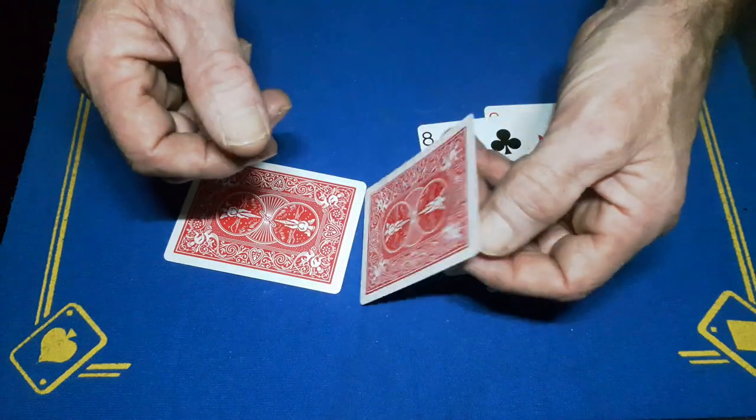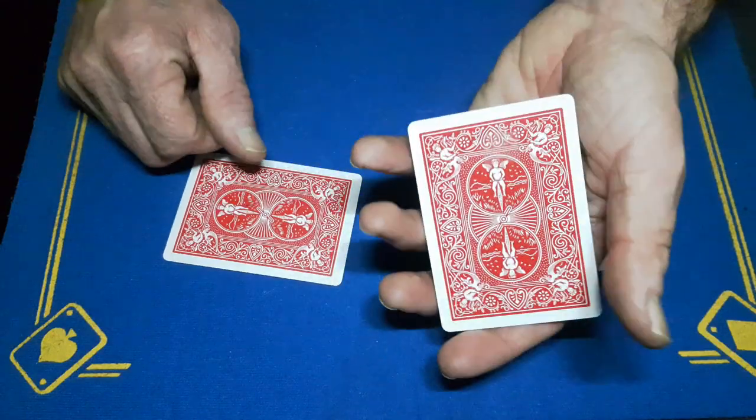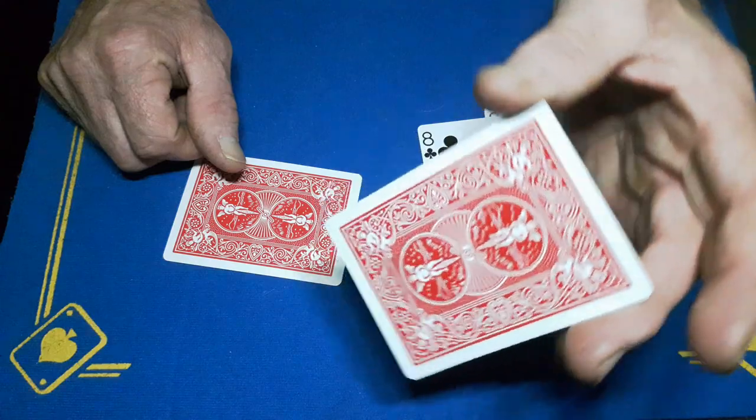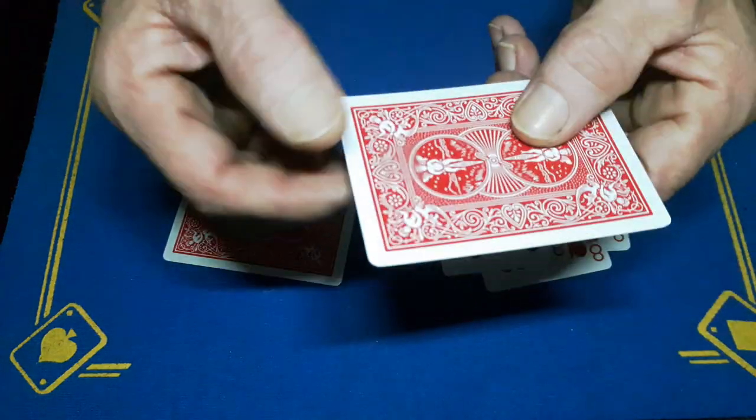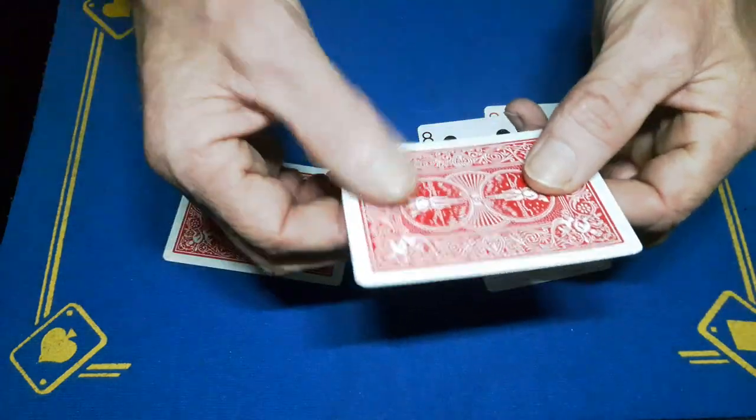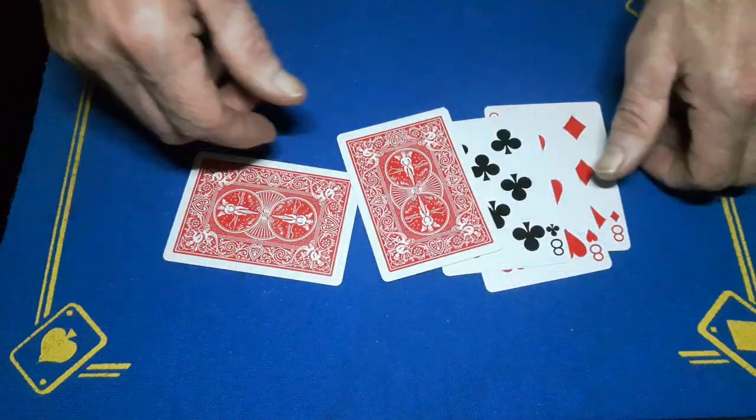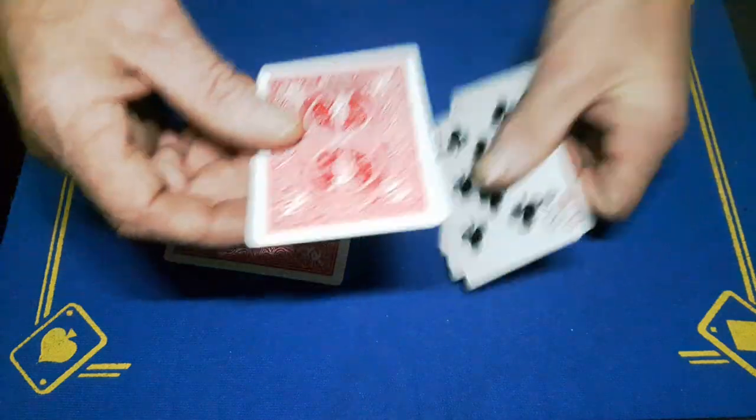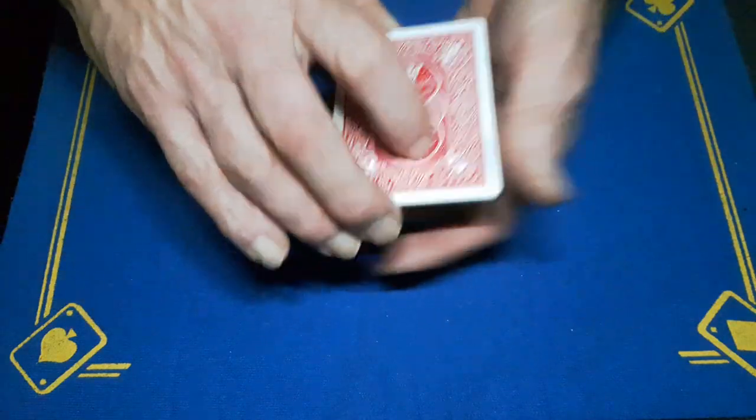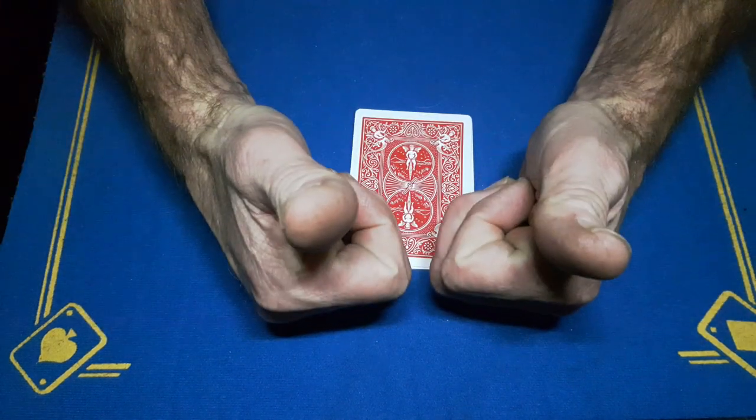But when I tried this on my daughter, she says, 'Oh, I can see something on the card, dad. I can see something.' So be careful with double stick tape because it is quite visible, especially when it's a bit dirty. So that's how I did it, guys. Comment, subscribe, like, and come back tomorrow for another card trick. Cheers.